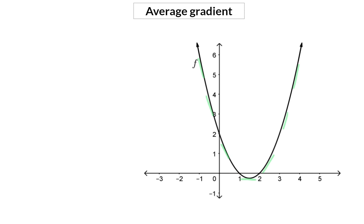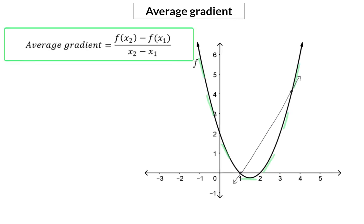When we want to determine the average gradient between two specific points on a curve, we are going to take those two coordinates and draw a straight line between them, and then calculate the gradient of that straight line. Because the straight line is the only function with a constant gradient, the average gradient is determined exactly like we determine the gradient of a straight line.